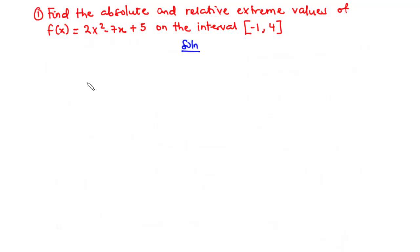You should notice that the absolute maximum and minimum values are the same as the global maximum and minimum values, and also the relative maximum and minimum values are the same as the local maximum and local minimum values. To solve this question, first of all, let's find the derivative of this function.